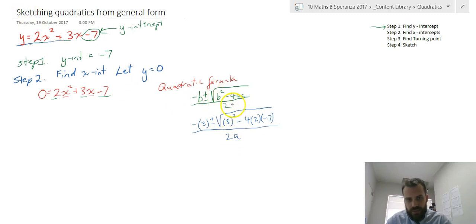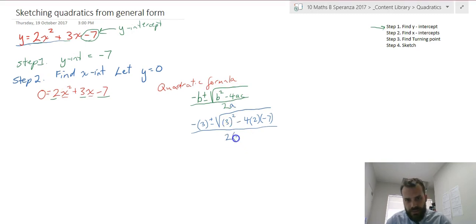All over 2a. So 2 times 2. Now you could type all of that into your calculator, but I'm going to do a little step first, and it's probably really important that we do that little step.